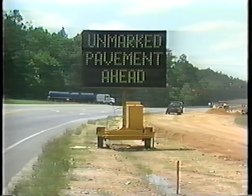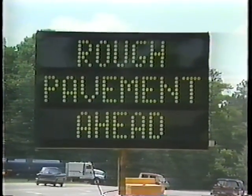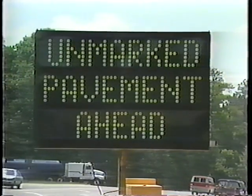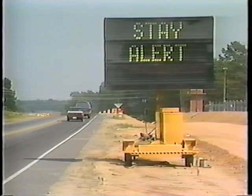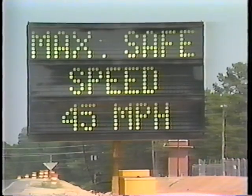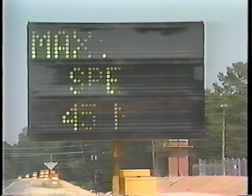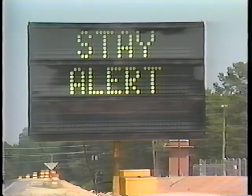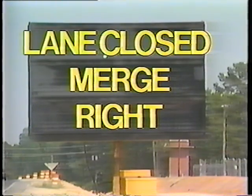Portable changeable message signs, capable of displaying various messages to motorists, can supplement construction zone signing. These devices are normally trailer or truck mounted with their own power system. Because they are expensive to buy and operate, changeable message signs are normally used for more complex traffic control plans. When using a changeable message sign, be sure the message is clear — a lengthy message may distract the motorist too long. Word order can also cause problems; for example, 'right lane closed merge' would get a different driver response than 'lane closed merge right,' even though the messages are similar except for the beginning point.